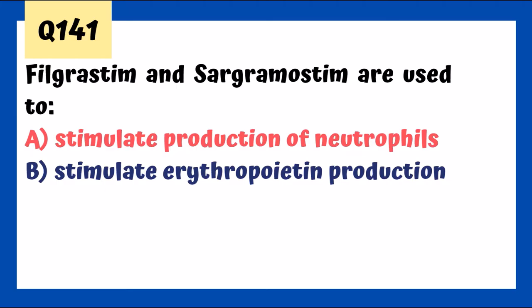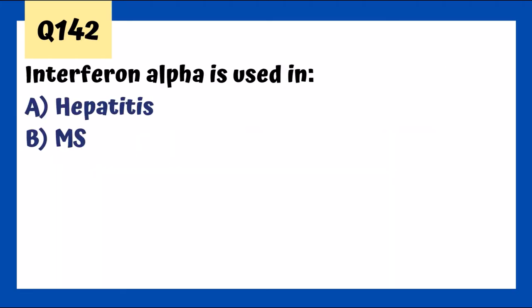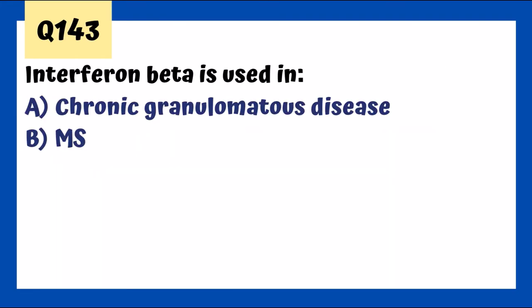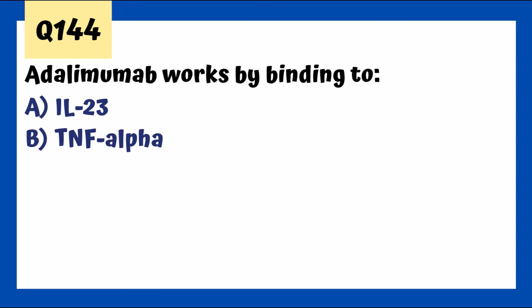Interferon alpha is used for hepatitis; interferon beta is used for multiple sclerosis. Adalimumab works by binding TNF-alpha — it's a TNF-alpha inhibitor used in rheumatoid arthritis, IBD, ankylosing spondylitis, and psoriasis. Patients with tuberculosis or CMV should not take adalimumab.